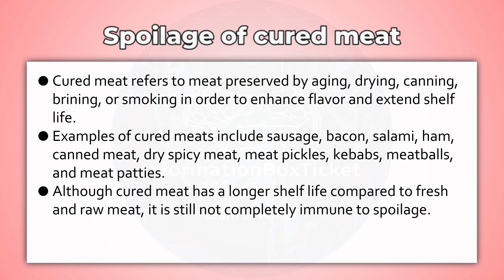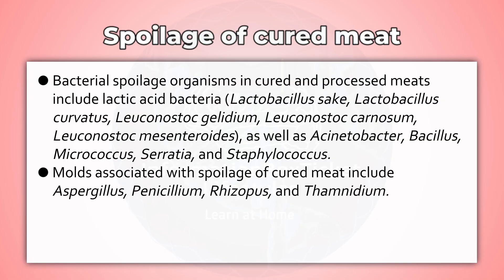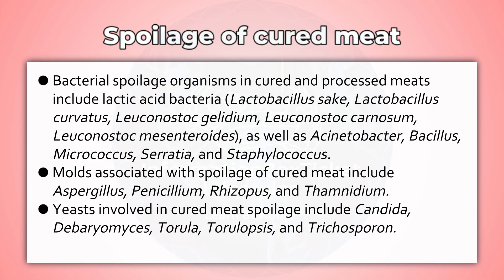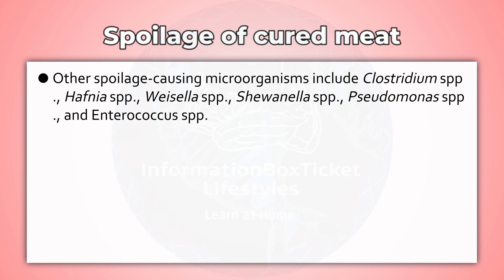Bacterial spoilage organisms in cured and processed meats include lactic acid bacteria — Lactobacillus sakei, Lactobacillus curvatus, Leuconostoc gelidum, Leuconostoc carnosum, Leuconostoc mesenteroides — as well as Acinetobacter, Bacillus, Micrococcus, Serratia, and Staphylococcus. Molds associated with spoilage of cured meat include Aspergillus, Penicillium, Rhizopus, and Thamnidium. Other spoilage-causing microorganisms include Clostridium species, Hafnia species, Weissella species, Shewanella species, Pseudomonas species, and Enterococcus species.